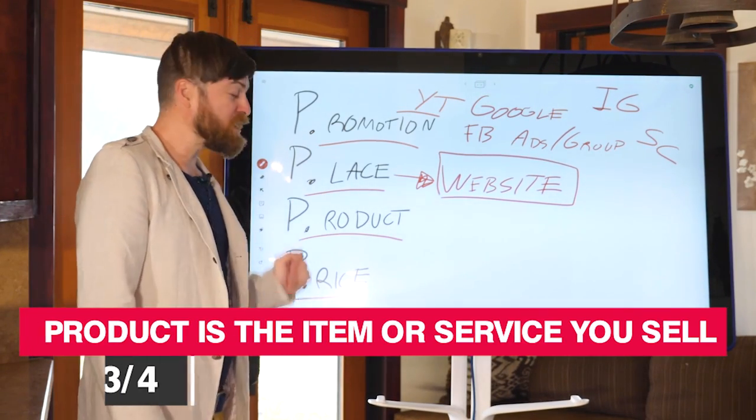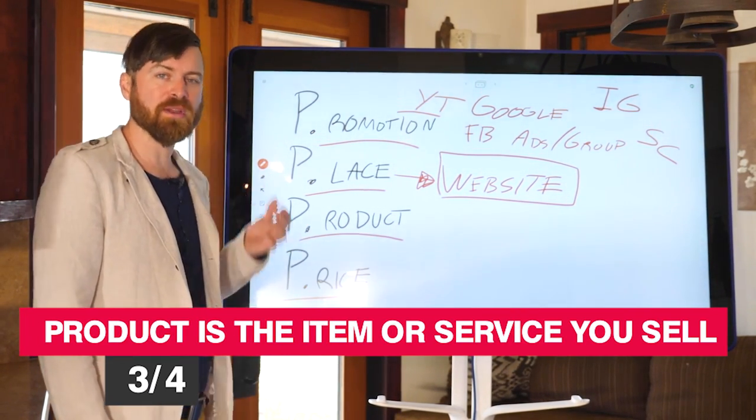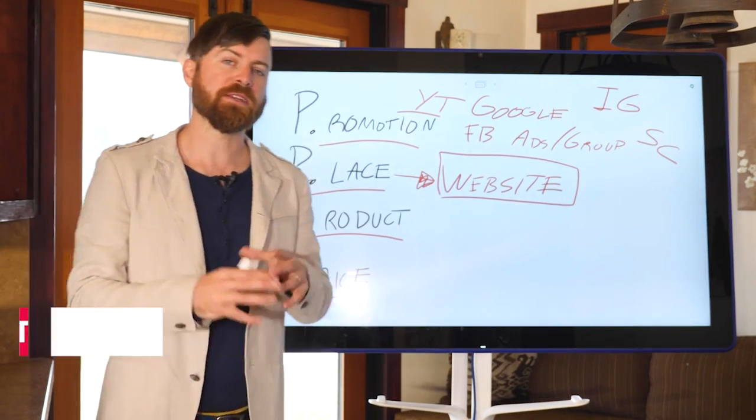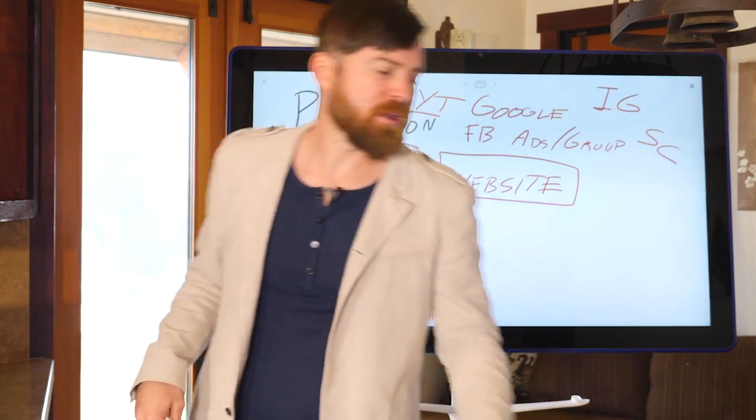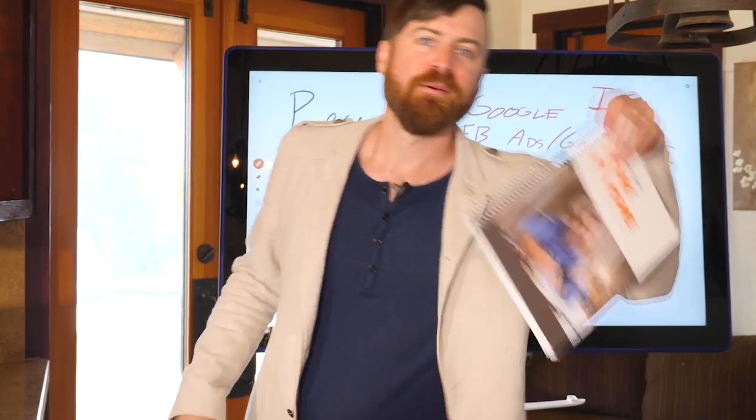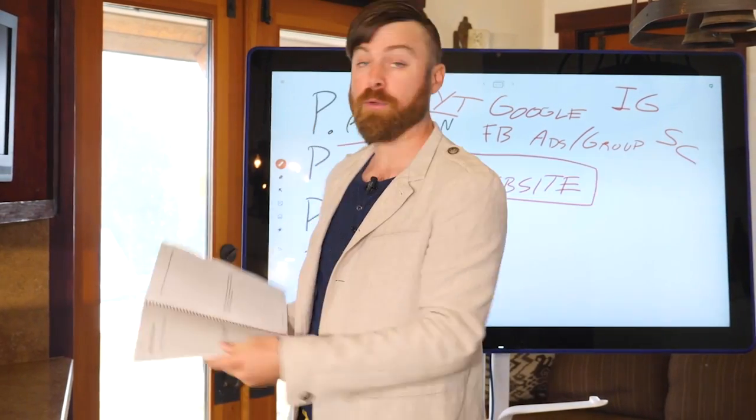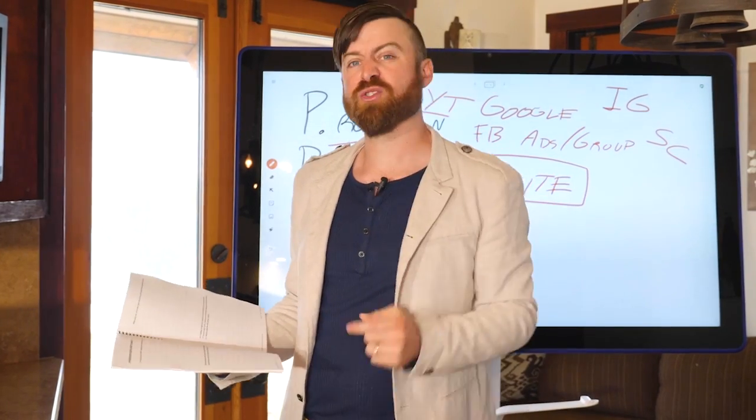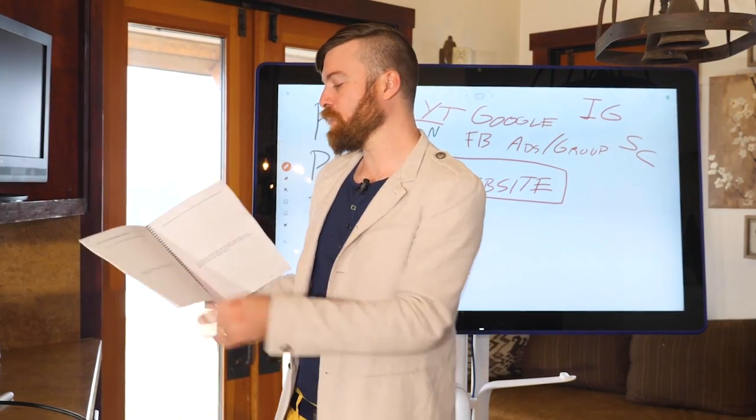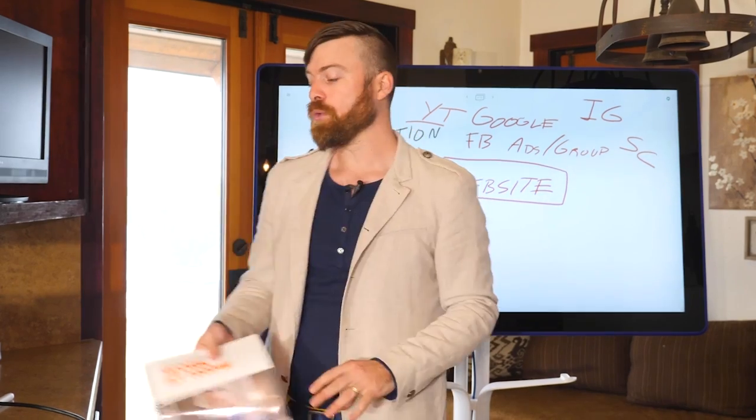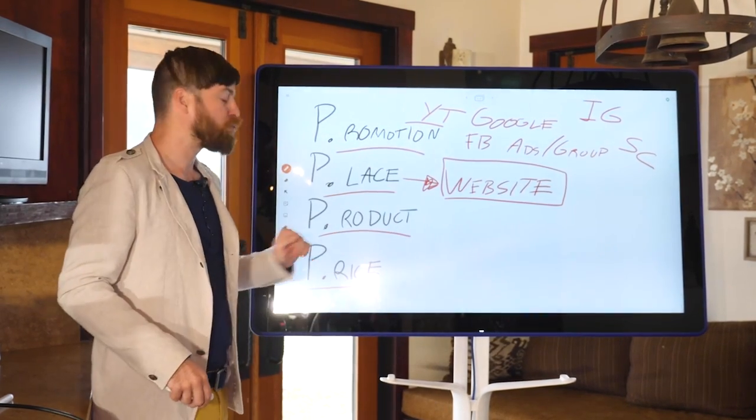The third P is your product. This is pretty self-explanatory. It's either the product or the service that you're actually selling. For this example, let's use the example of my book. I sell a book. It's a workbook, it has exercises in it. If you want to get the book, it's only a dollar digital version. Links are in the description. We have exercises and all sorts of stuff you can use in the book.